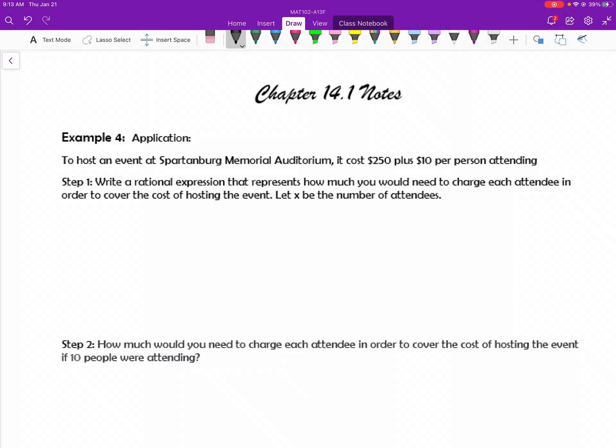So this example says, to host an event at Spartanburg Memorial Auditorium, it costs $250 plus $10 per person attending. The first step says to write a rational expression that represents how much you would need to charge each attendee in order to cover the cost of hosting the event. Let x be the number of attendees.